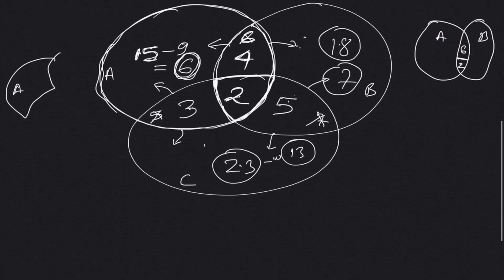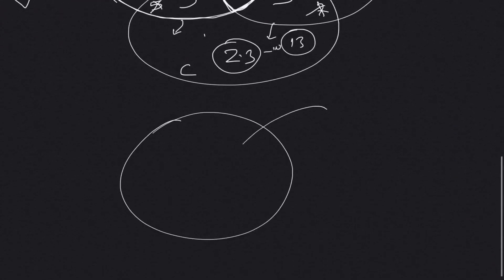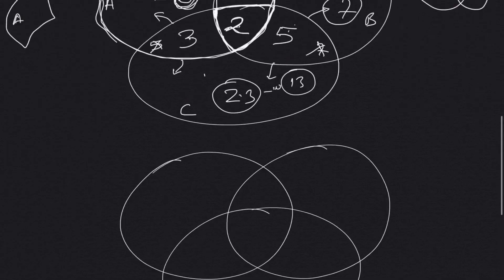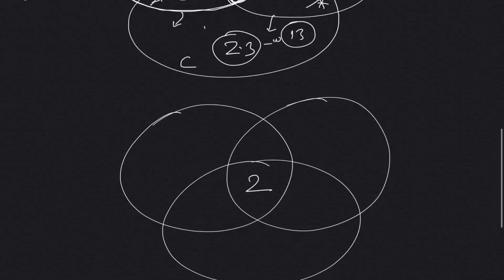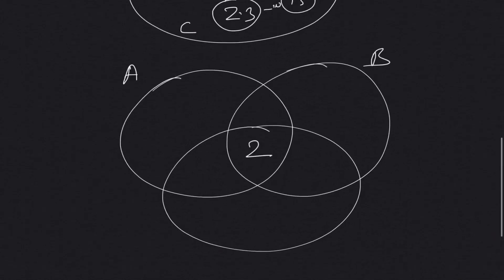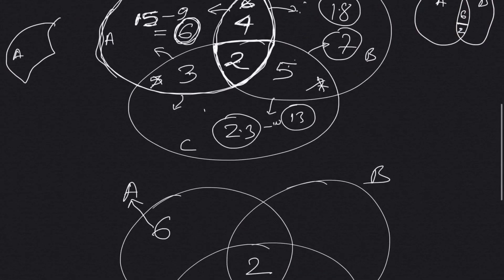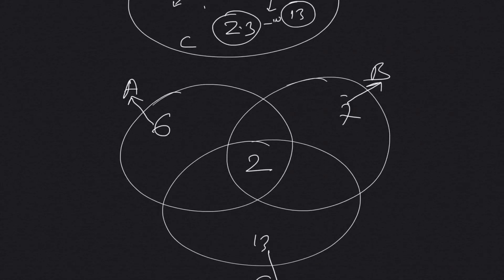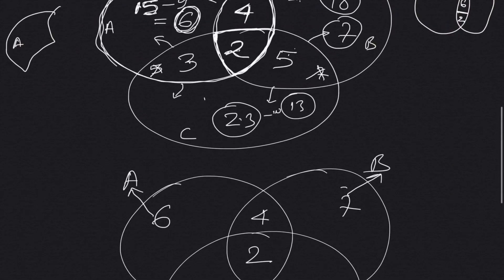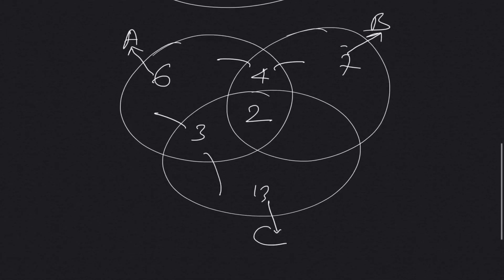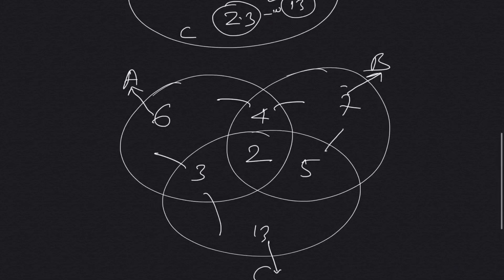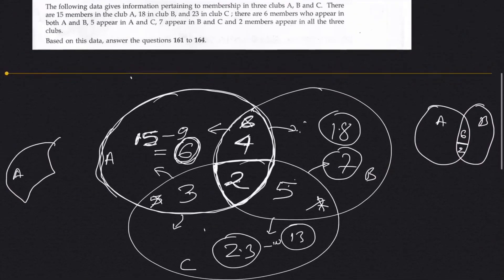So once we've segregated all the numbers: the members present in all three clubs is two. Six belong only to A. Seven belong only to B. Thirteen belong only to C. Four belong to only A and B. Three belong to only A and C. And five belong to only B and C. Once we have segregated the numbers like this we should be able to solve the answers.